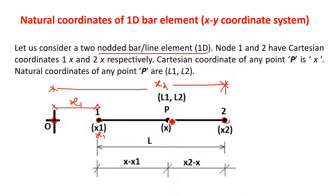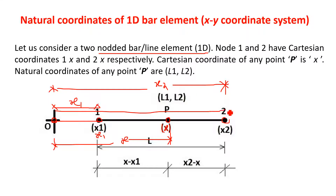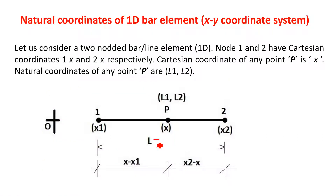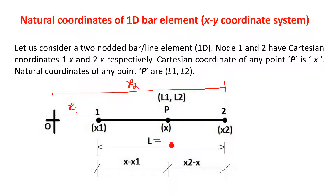If you select any point P on this bar element, its Cartesian coordinate is assumed as X — that is, the distance of point P from origin O is X. So this distance is X, this distance is X1, and from origin to node number 2 this distance is X2. L is the length of the bar element, and L is equal to X2 minus X1.